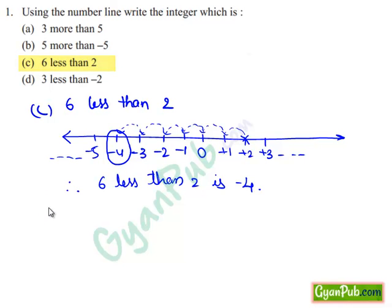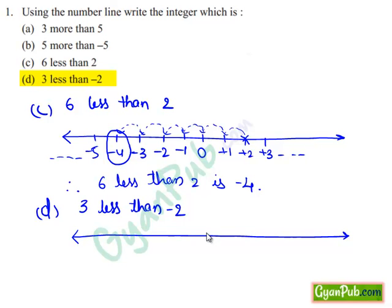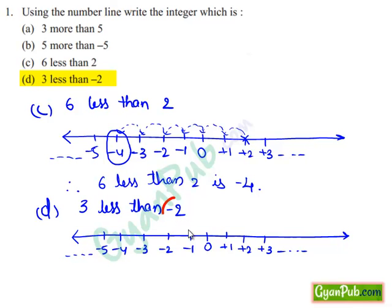Similarly, take down part d: 3 less than minus 2. To know the integer which is 3 less than minus 2, we will use a number line. Mark zero in the middle. Right side of zero are plus 1, plus 2, plus 3 and so on. Left side of zero are minus 1, minus 2, minus 3, minus 4, minus 5 and so on. First, we will mark minus 2 on the number line. For this, we have to move 2 steps to the left of zero: 1, 2. Mark minus 2 on this number line.